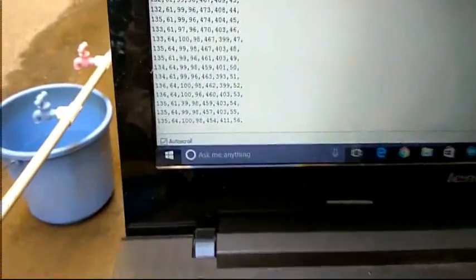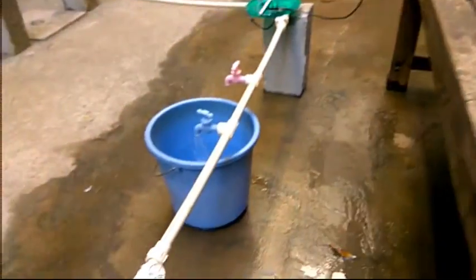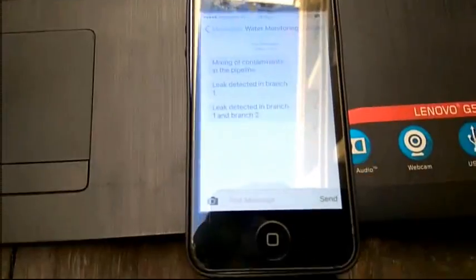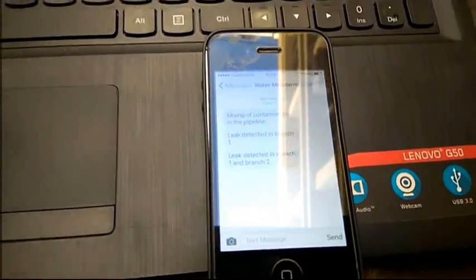Next we will be turning on the tabs in branch 2. Now both 1 and 2 show difference in readings. So the message will be leak is detected in both branch 1 and branch 2. As shown.